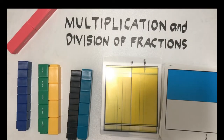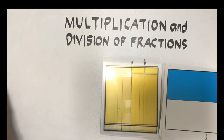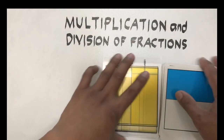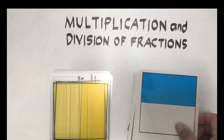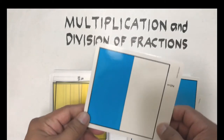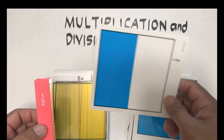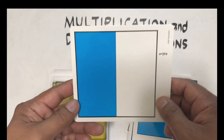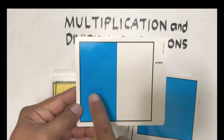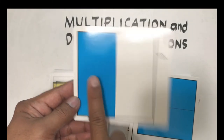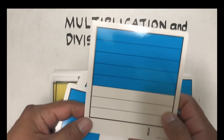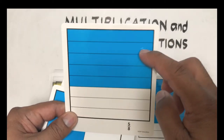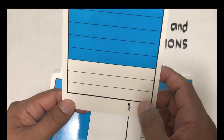Now, with that as our review, let's move to our main lesson, which is multiplication and division of fractions. What I have here are fraction cards. Another way of representing one-half, instead of the bar, is we can use this card — one blue out of two parts. We're taking one part out of two parts. You can also have five parts out of eight parts, so this is called five over eight.